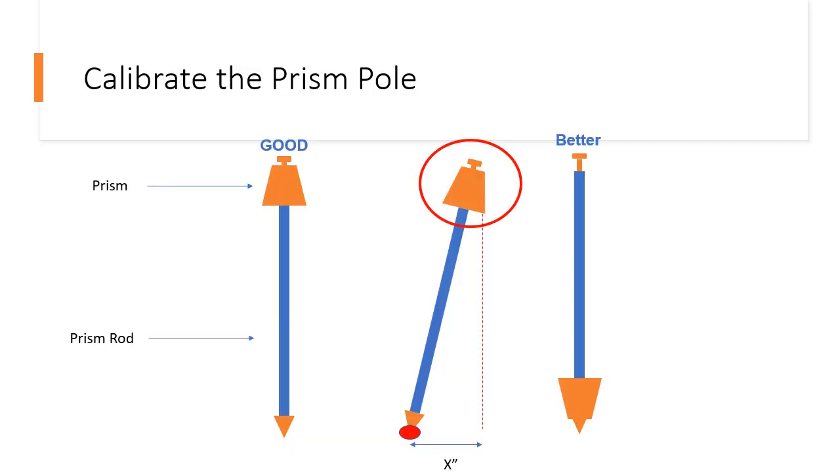So now let's go on to the second one, where we talk about the prism pole. And this might be an image you've seen before. Of course, we always mention that we want to have our prism, which is indicated by this orange top up here, towards the bottom, because that actually eliminates a lot of the prism pole leveling errors that you might experience.